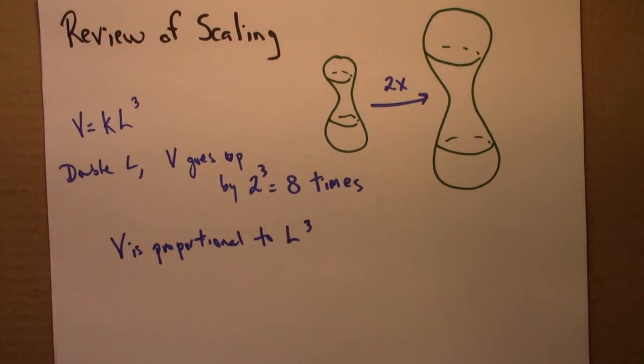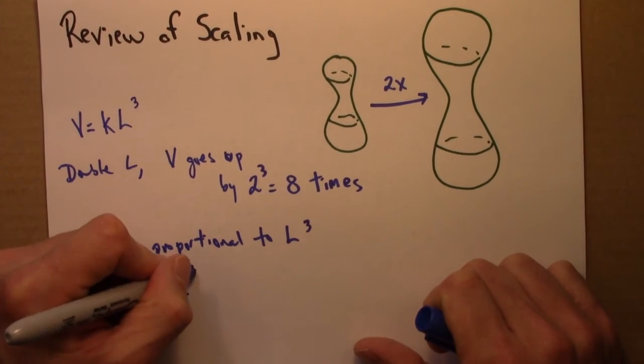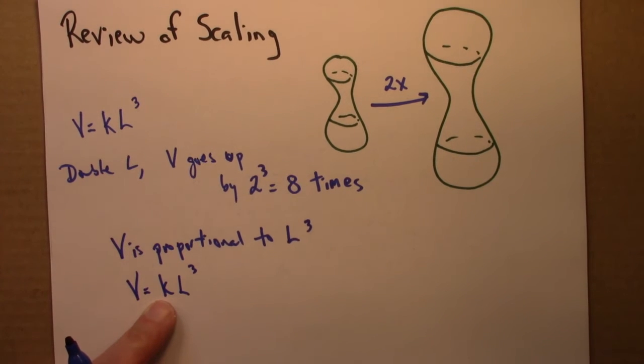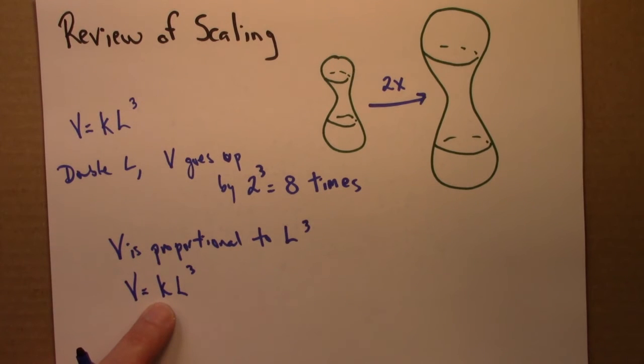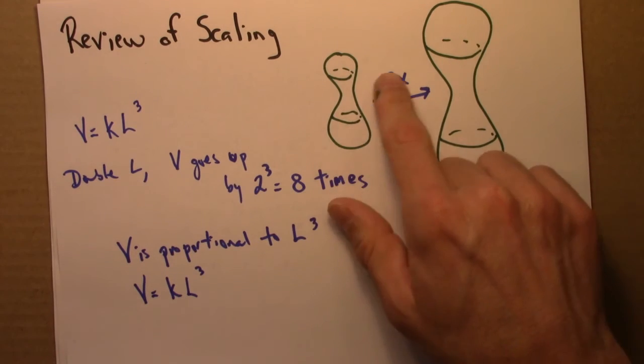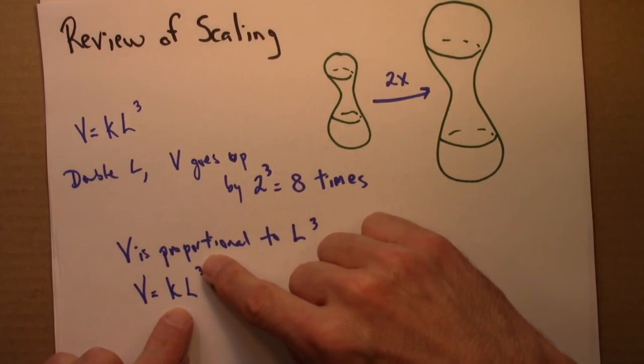And that would be written mathematically, V equals KL cubed. And so K here is some constant. It would be different for different shapes. If it was a sphere, it would have one form. If it was a cube, it would have some other form. Who knows what that number would be for this shape. But there would still be some L cubed dependence.